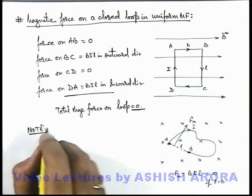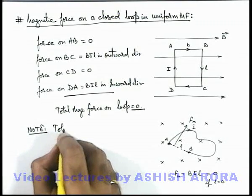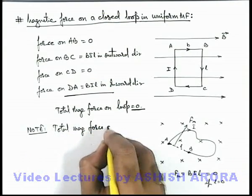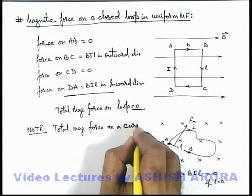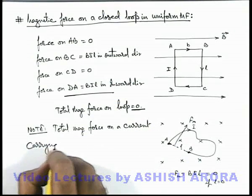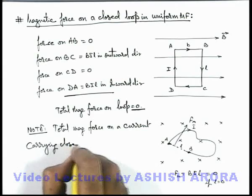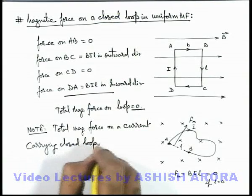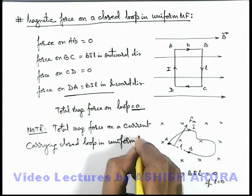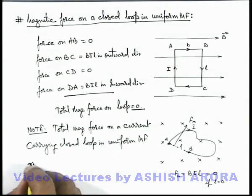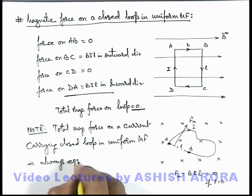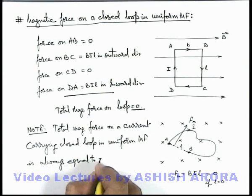So we can always keep this note in mind: the total magnetic force on a current-carrying closed loop in a uniform magnetic field is always equal to zero.